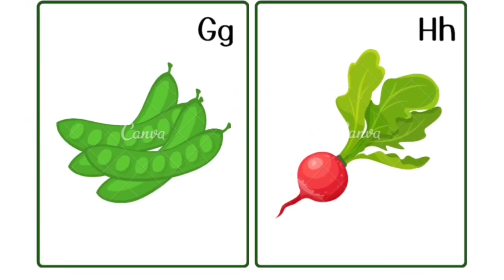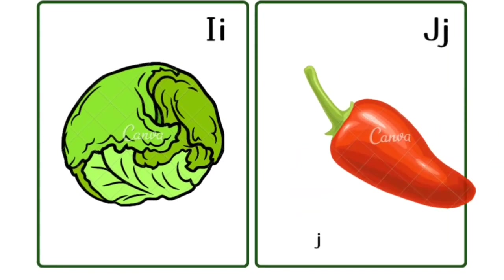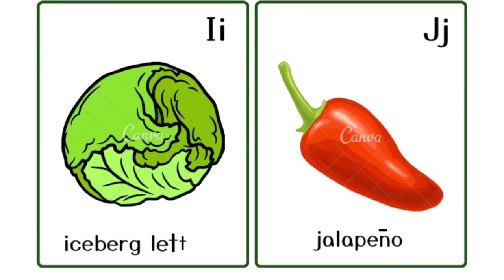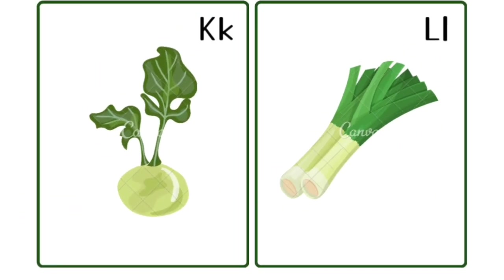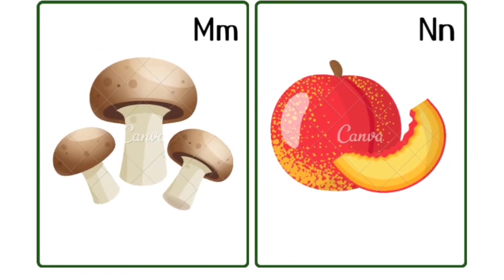M is for mat, m-m-mat. N is for net, n-n-net. O is for orange, o-o-orange. P is for pet, p-p-pet.